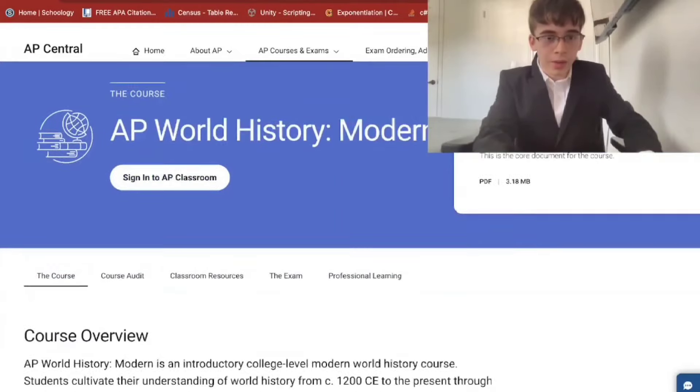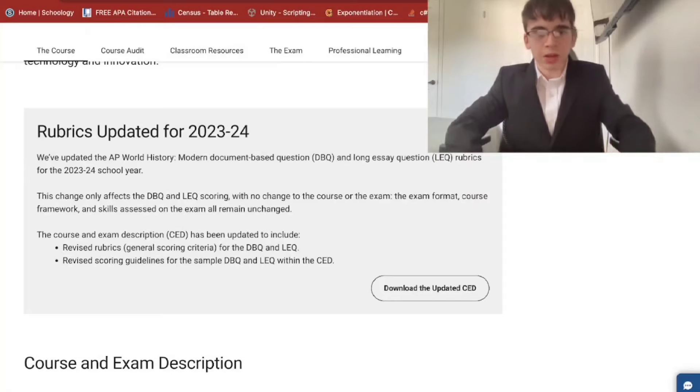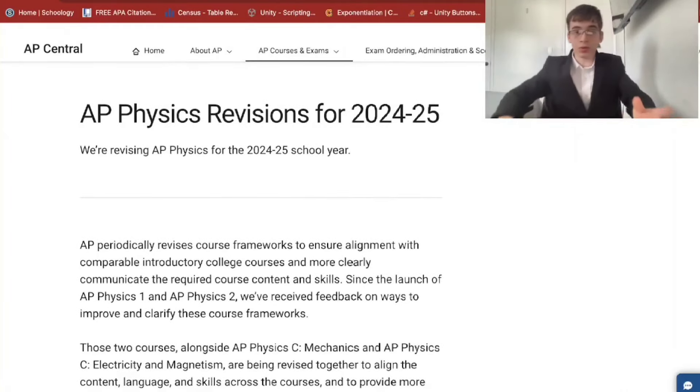Hello and welcome to Mr. AP. About nine months ago we published a video briefly going over the AP History and Social Sciences classes receiving changes to DBQ and LEQ rubric sections for 2023 to 2024 year and AP Physics changes for 2024 to 2025.